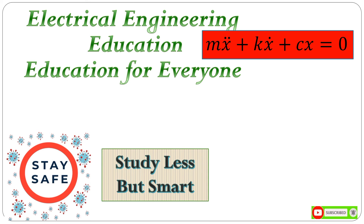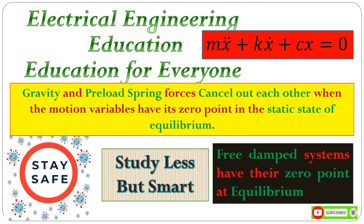Finally, if the motion variable has its zero point in the static state of equilibrium, then the gravity force and preload spring force cancel each other out, and we end up with a homogeneous equation of motion — that is, free damped systems have their zero point at equilibrium. This ends the presentation; thanks for watching.